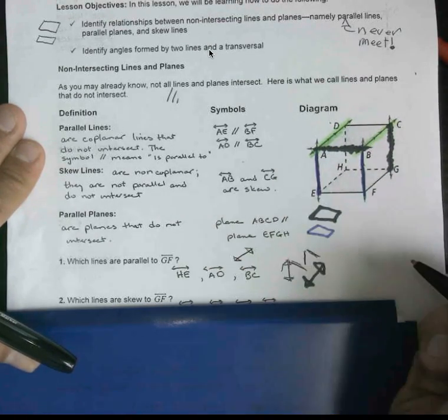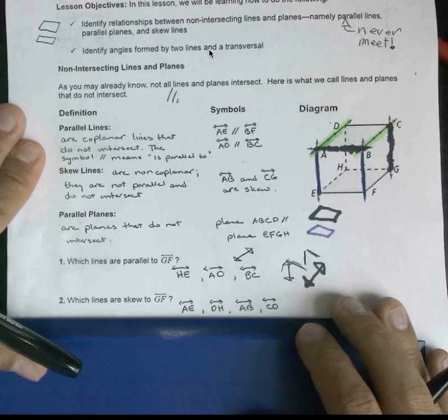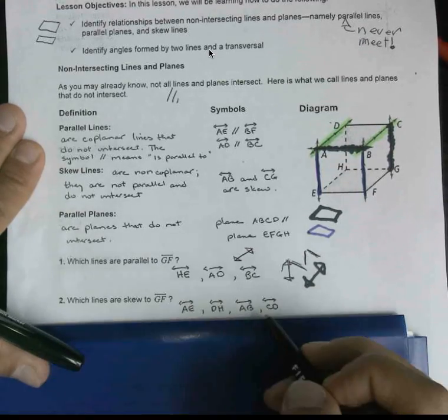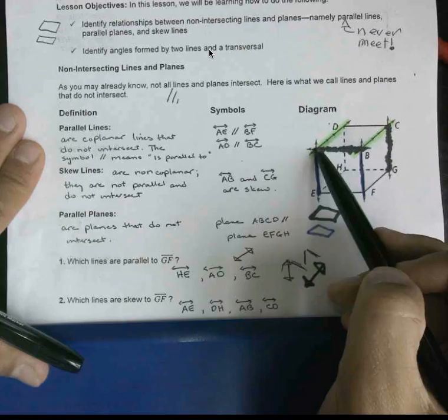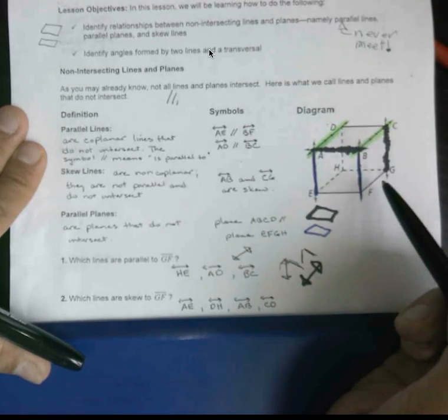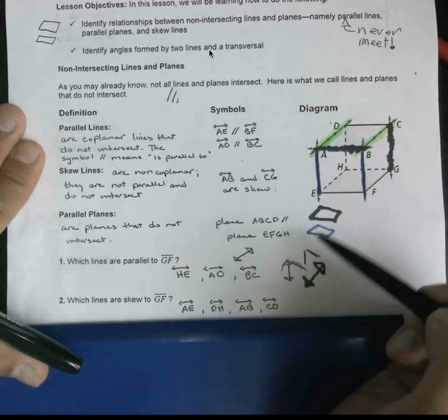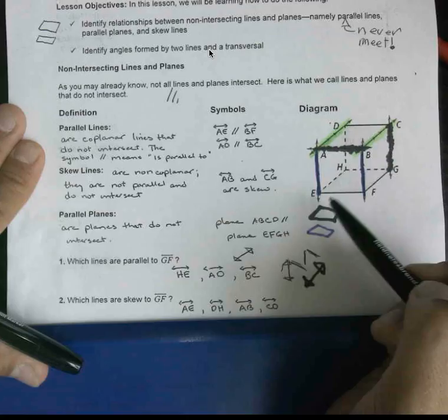So it's those four. Yeah, CD goes from here to here, AB goes here to here, DH was here to here in the back, and then also AE.